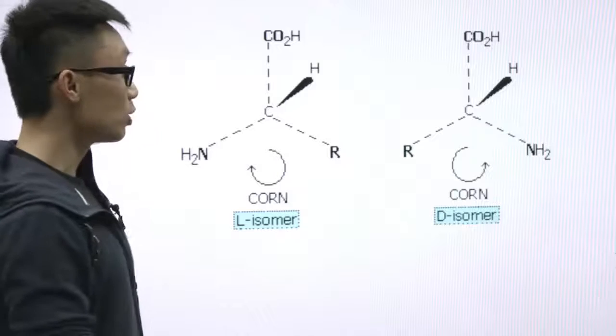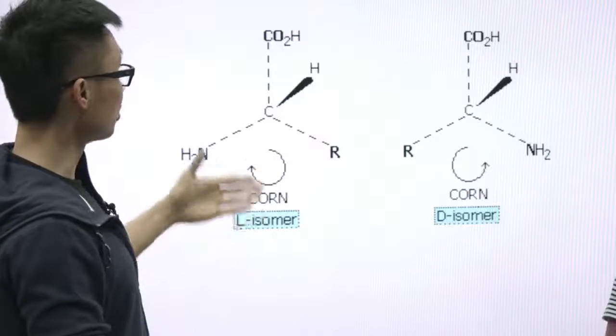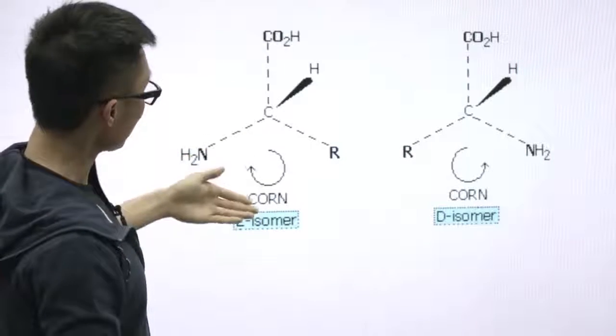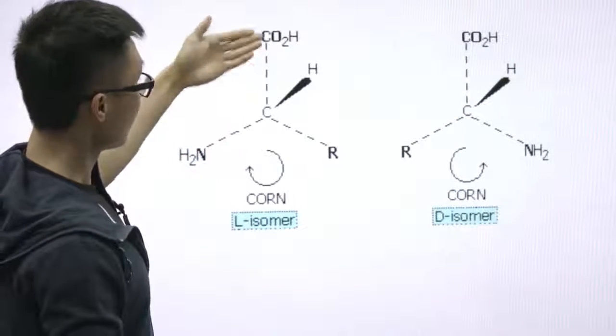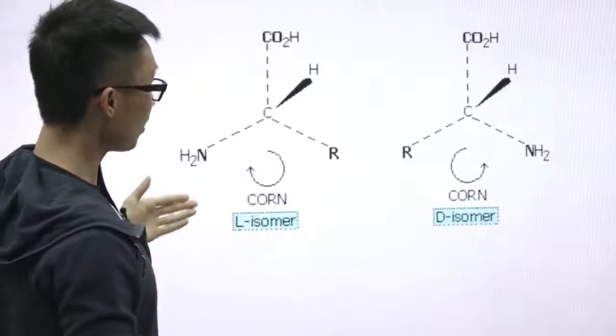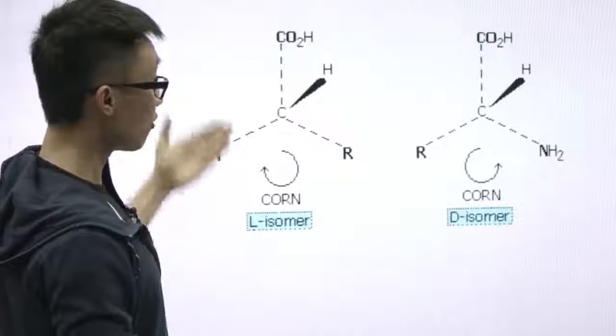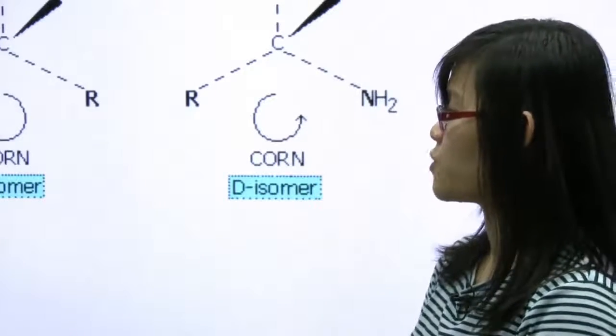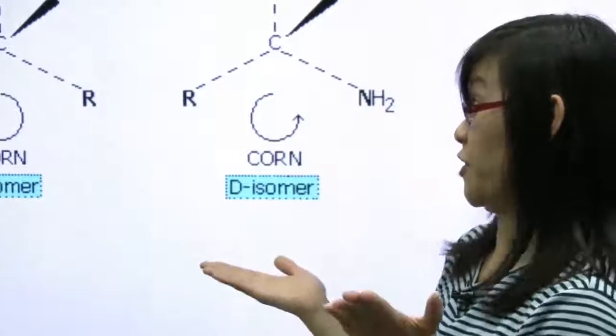Okay. So CORN method is actually a short form from this CORN. CORN is a short form from C-O-O-H, R from any group that is not denoted and N from nitrogen group. And this is a short form CORN. Oh, so I can use CORN to figure out which one is the duck and which one is the lion.